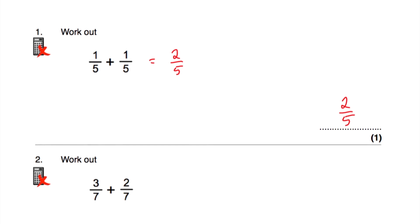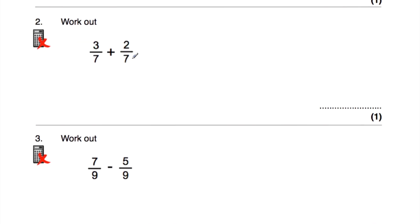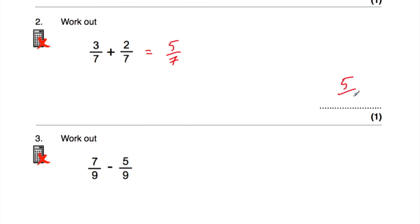Let's have a look at question number two. Question number two says: work out three sevenths plus two sevenths. Well, if we had three sevenths and then we add another two sevenths, altogether we'd have five sevenths. Three plus two is equal to five, so the answer is five sevenths.